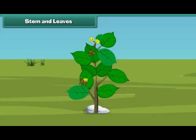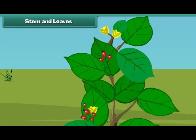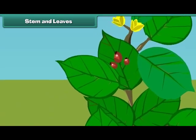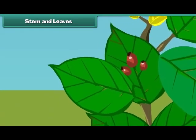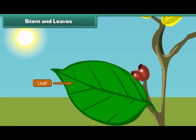Friends, do you know which part of the plant helps them to prepare food? That's right — it is the leaves. Leaves are green in color and are born out of a stem.